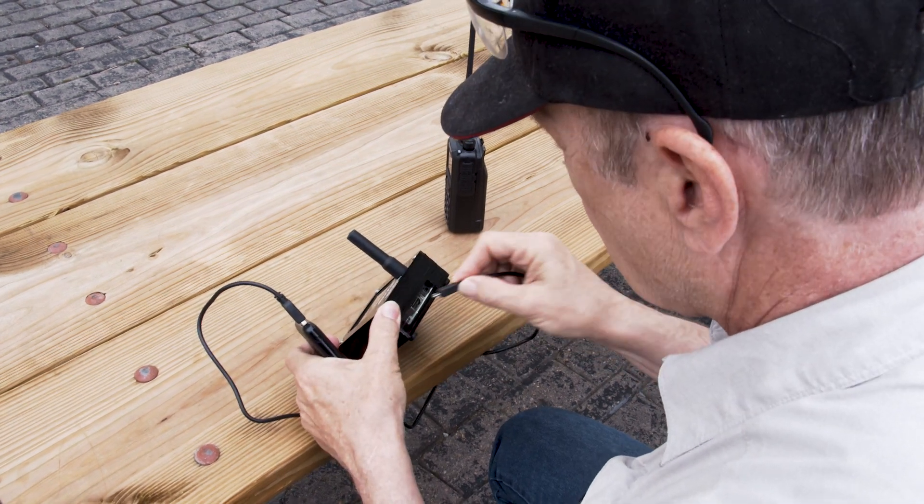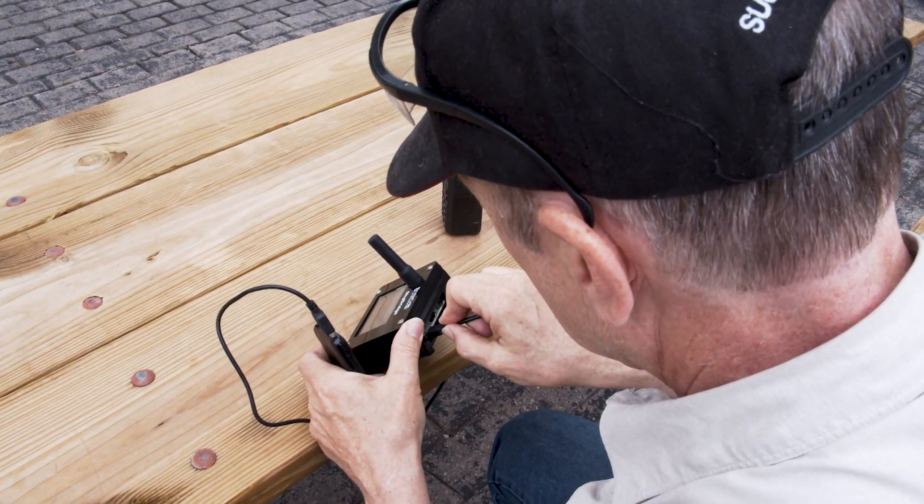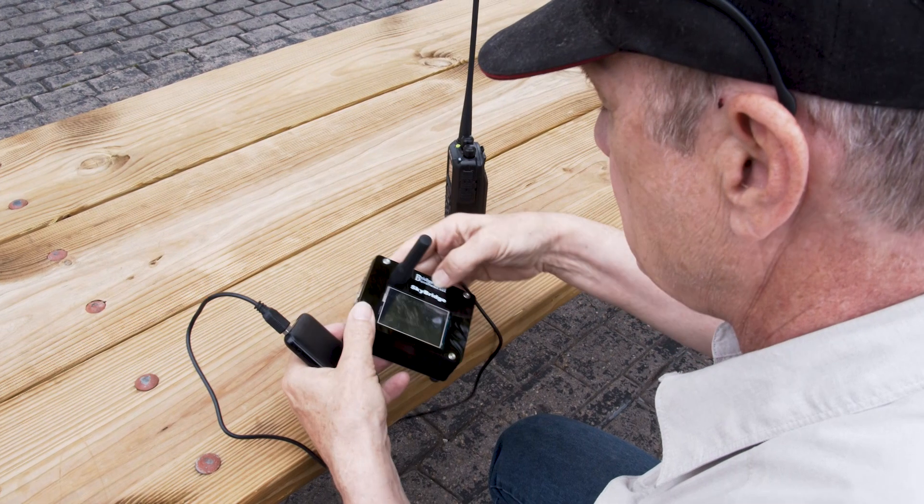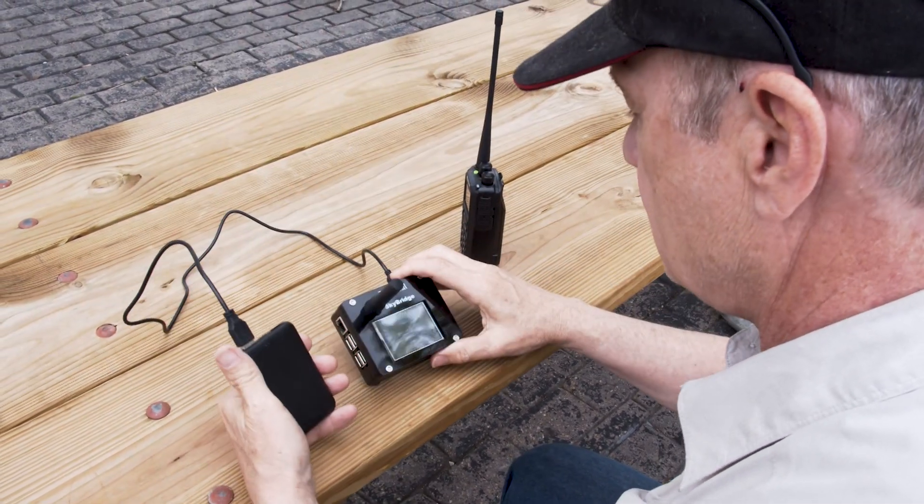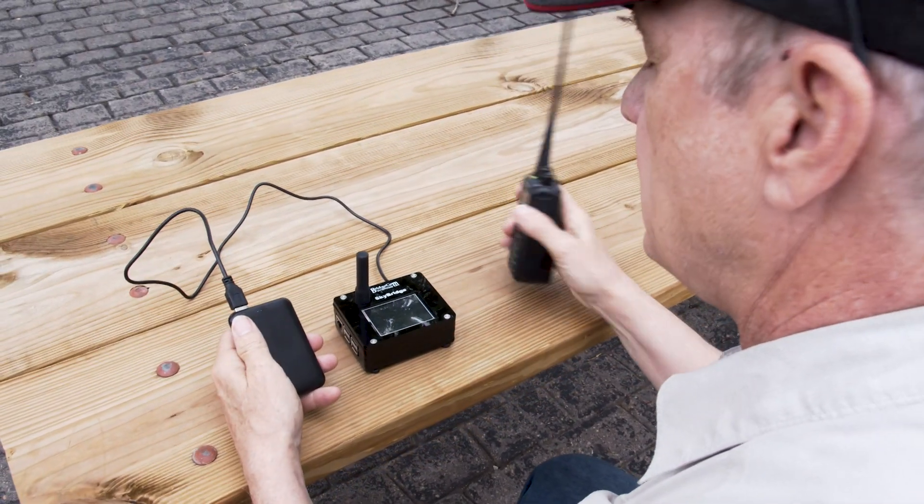Battery life is also important to consider, so we took care of it for you. The SkyBridge Plus comes with a 3000 mAh external battery to help you stay connected as long as you want. It also features a built-in OLED screen that can display a contact's name and DMR contact information.